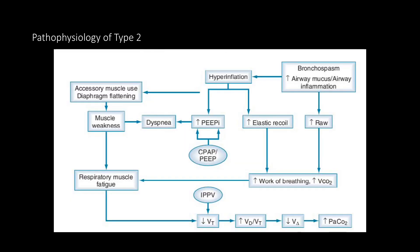This is a slide looking at the pathophysiology of type 2 respiratory failure. Clearly there's quite a lot going on here, but perhaps focus on the three main factors of increased work of breathing, respiratory muscle fatigue, and hyperinflation. Look at the consequences of each one of those.